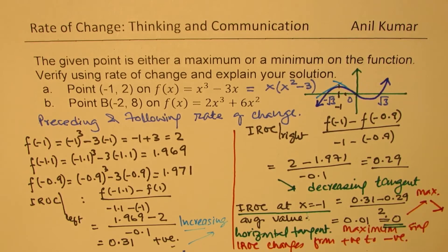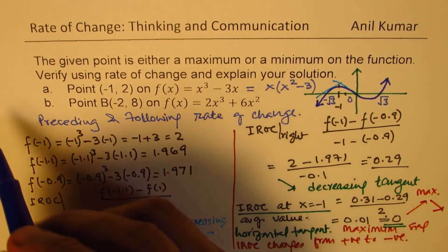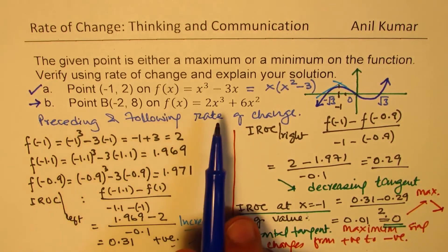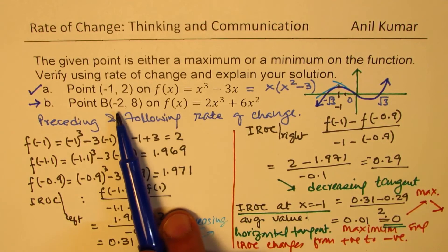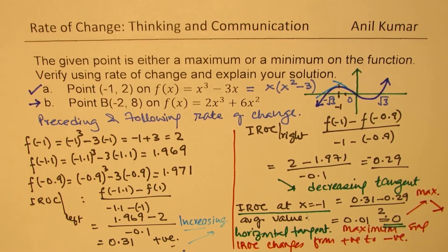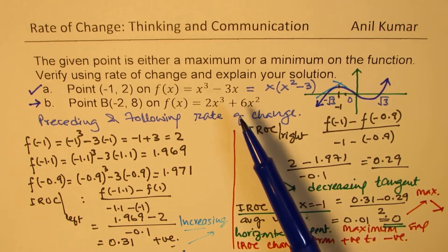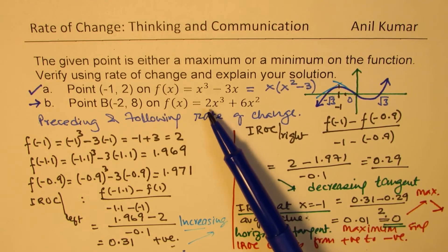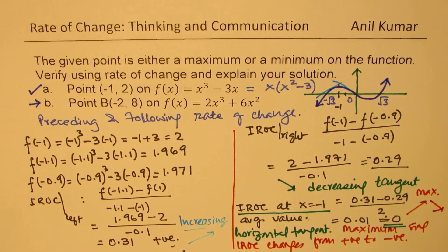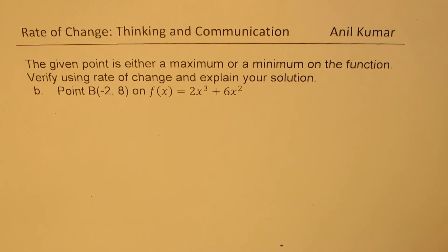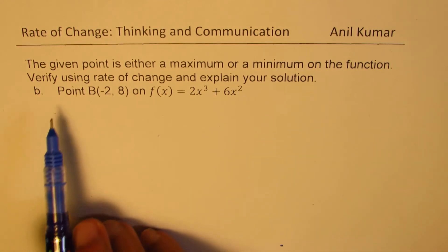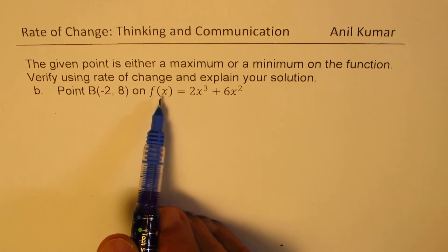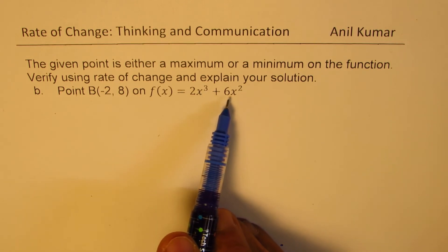I hope all the steps are clear. Now I'd like you to pause the video and do part B yourself — there's hardly any difference. The point is (minus 2, 8) on f of x equals 2x cubed plus 6x squared. Perform the calculations and verify that there is indeed a local maximum at this point.